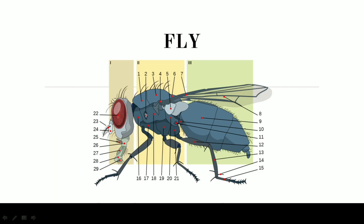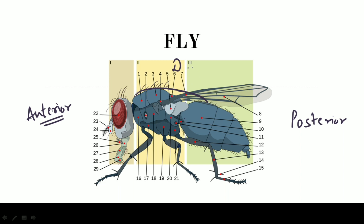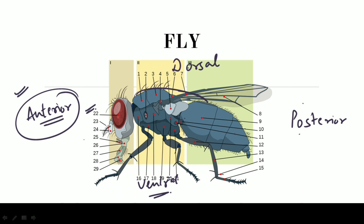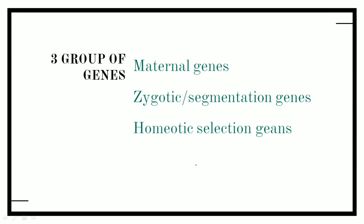Now looking at the fly: it is important to understand what is anterior and what is posterior, because anterior-posterior axis development is very important in the syllabus. Consider a fruit fly — the front part is the anterior position and the back position is the posterior. The upper level is the dorsal and the lower one is the ventral position. So: front = anterior, back = posterior, upper = dorsal, lower = ventral.